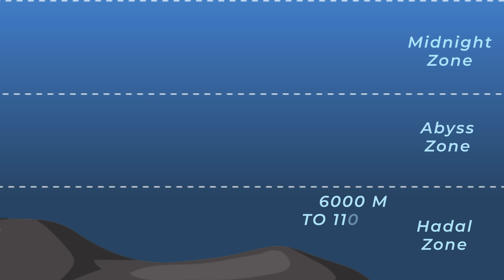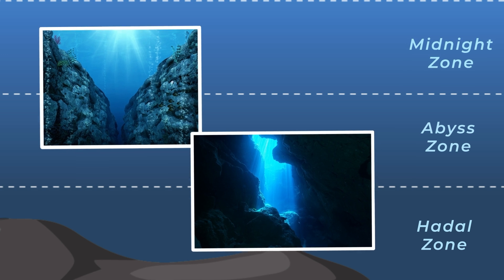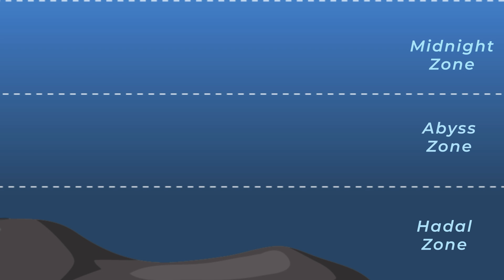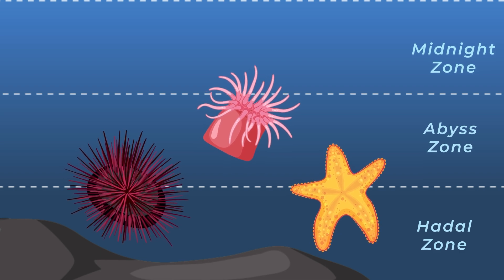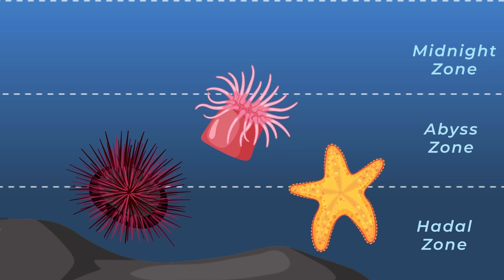The hadal zone is found in deep ocean trenches and canyons. It's one of the most extreme environments on Earth, with super high pressure and near freezing temperatures. But even here, life finds a way. Small crustaceans and some special kinds of fish can survive in this extreme darkness. Isn't it amazing how animals can live in such deep and dark places?